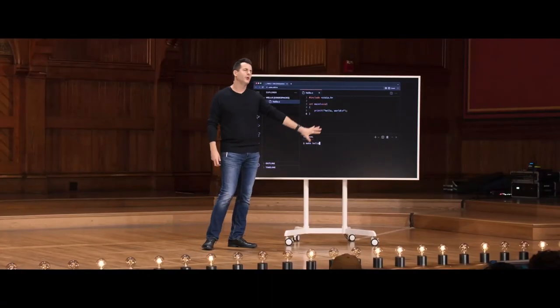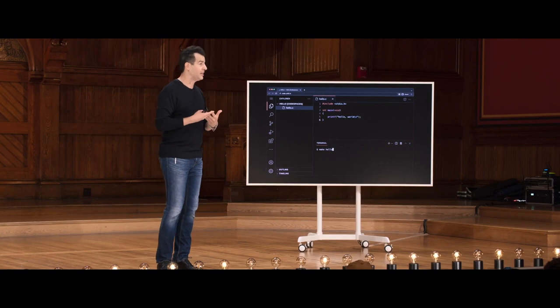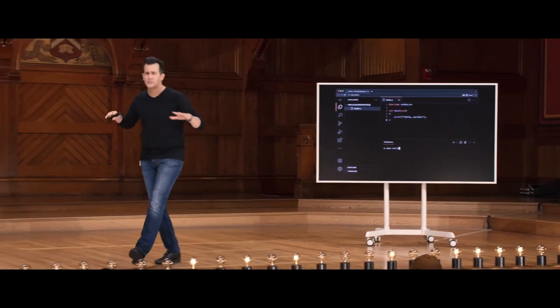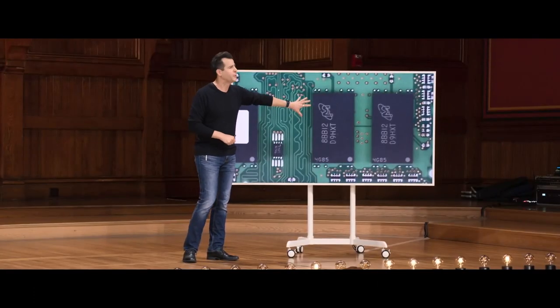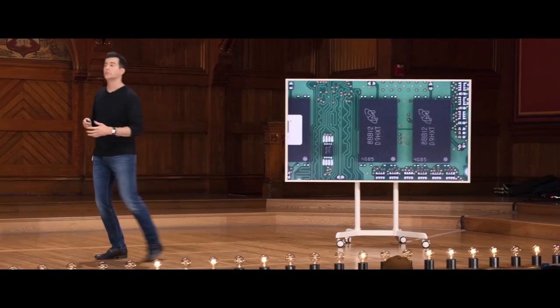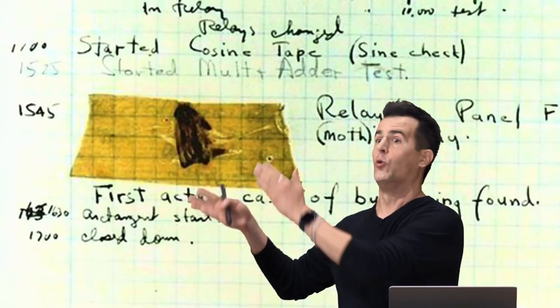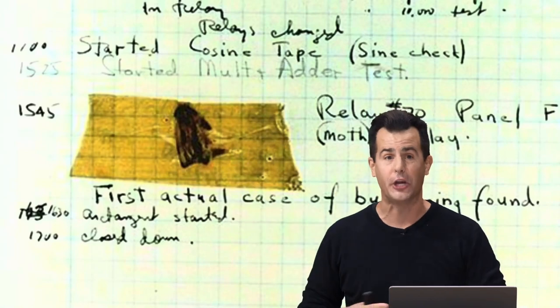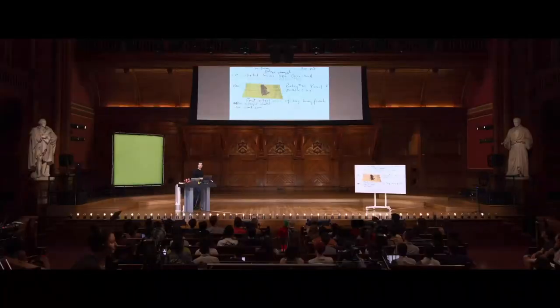You'll learn to use industry-standard tools — Visual Studio Code, or VS Code. You'll use a cloud-based version initially so you don't suffer any technical difficulties; it'll just work right off the bat. We'll use that tool and others to explore ideas in computer science, and take a look underneath the hood at your computer's memory — RAM, random access memory — where all the data is stored. We'll also look at bugs: a bug is a mistake in a program. We'll teach you how to debug programs, find your own mistakes, and improve your code.